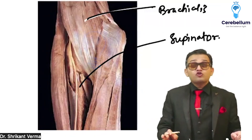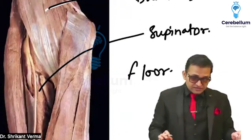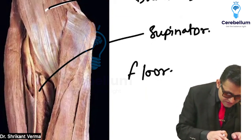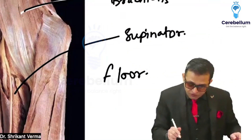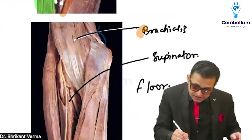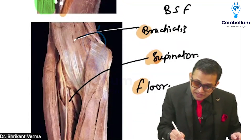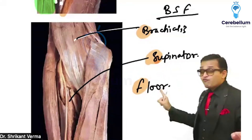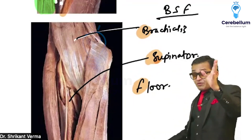The floor is formed by the mnemonic BSF: B for brachialis, S for supinator, F for floor. These two muscles — brachialis and supinator — make the floor of the cubital fossa. Remember BSF as Border Security Force.